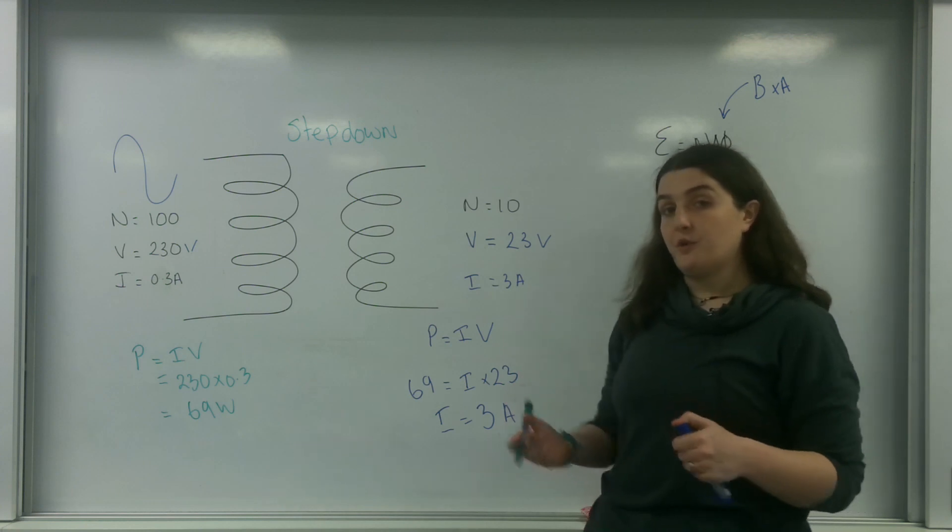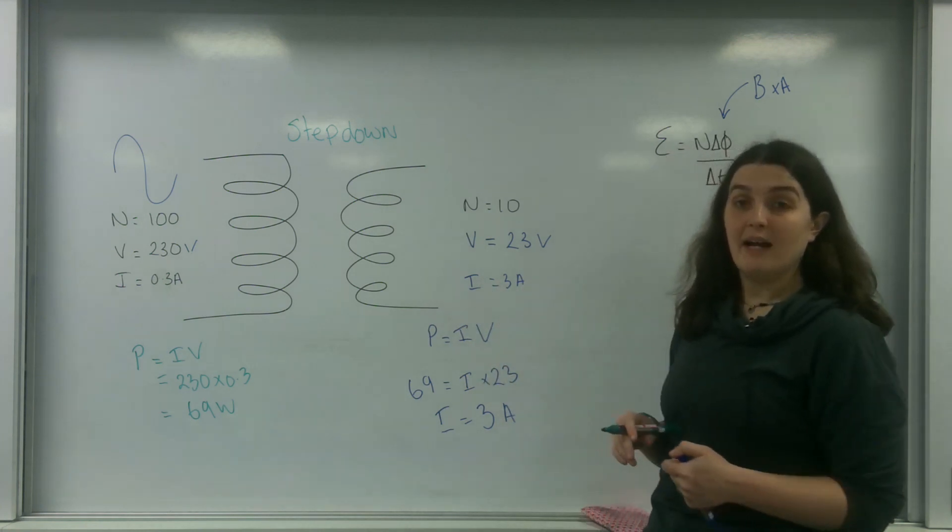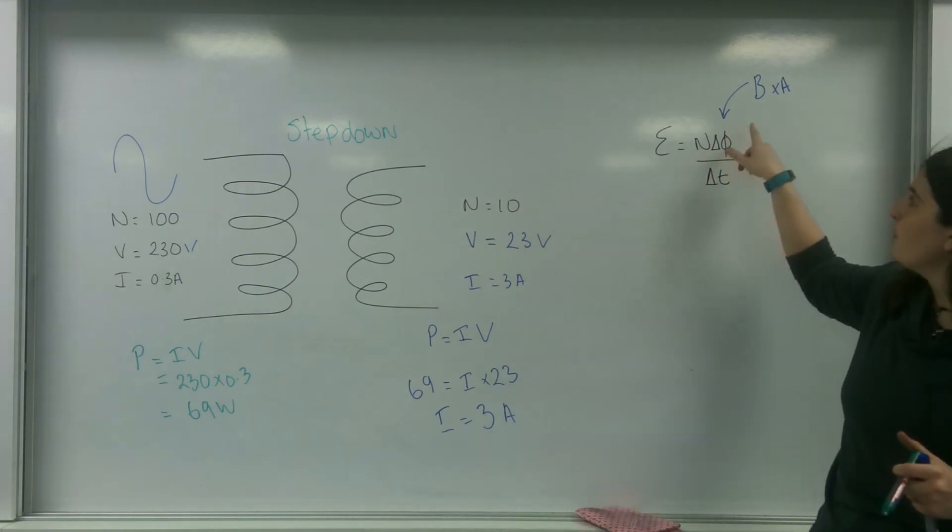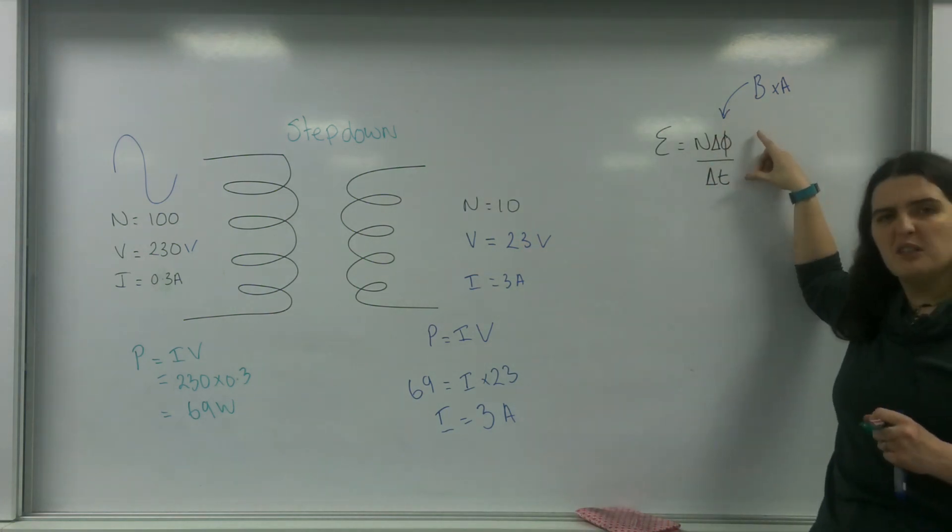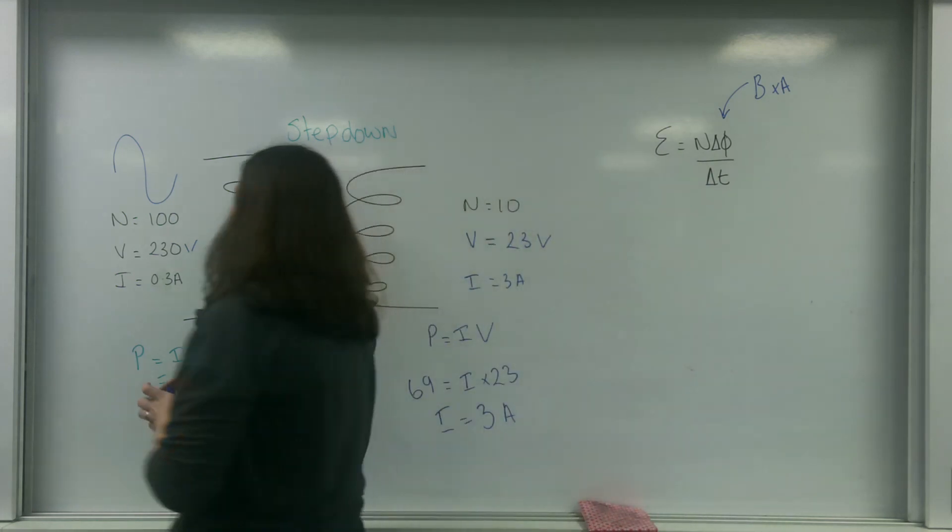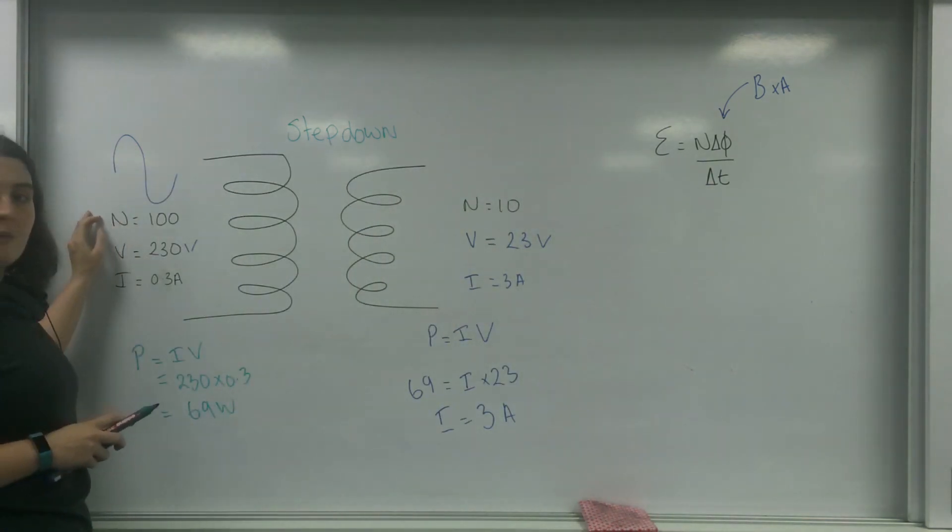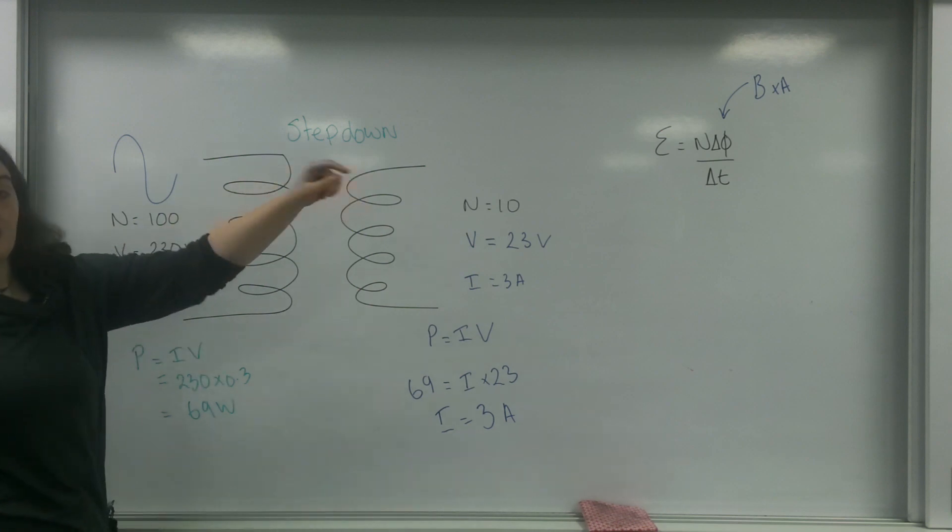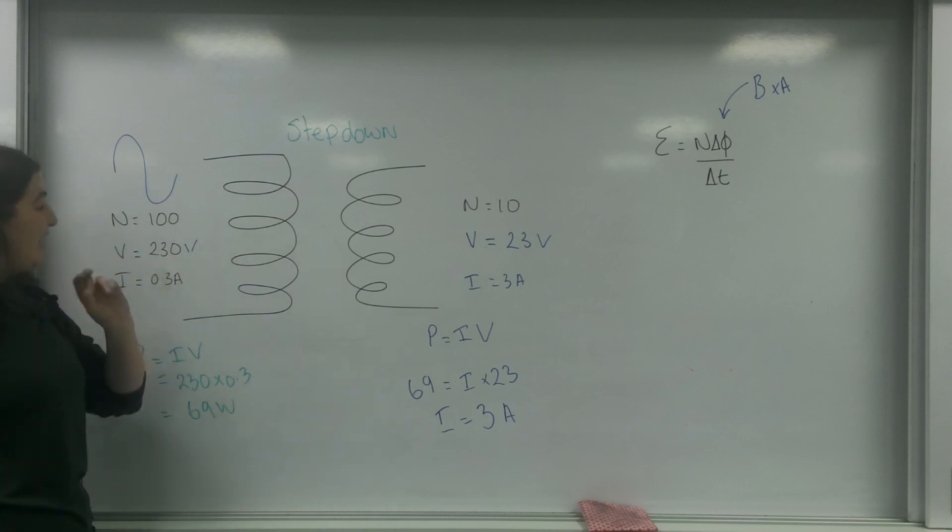A step up transformer is basically the other way around. So this object here would make some flux, not as much flux as this one, because this is a much bigger coil. It would have a bigger flux linkage because of that change in flux. So more EMF is induced, but less current would be induced.